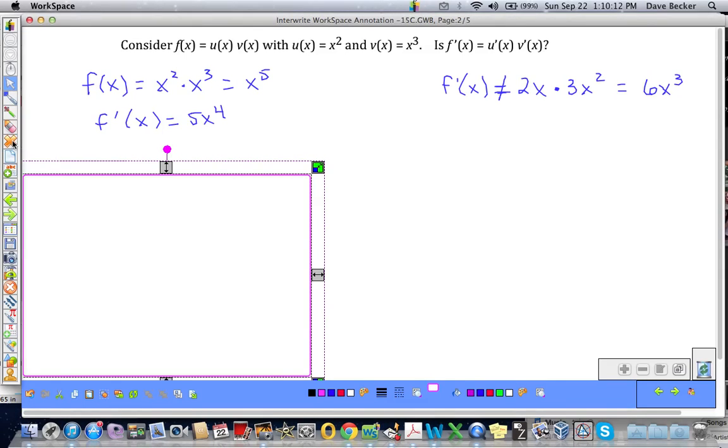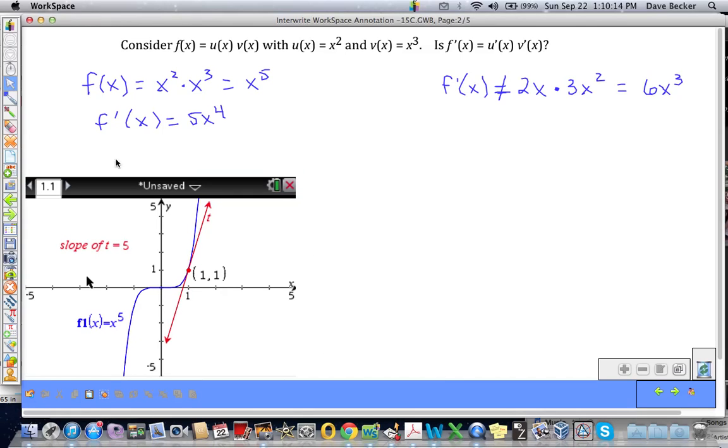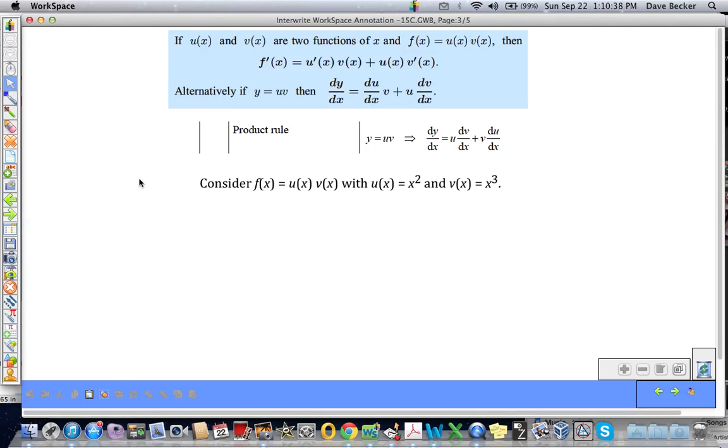And just to sort of hammer that home, I did it on the calculator for you. This is the derivative of x to the fifth power. And when x equals 1, the slope of the tangent to the curve is 5. And when x equals 1 here, the slope of the tangent would be 6. So that's two ways to show you that it doesn't work.